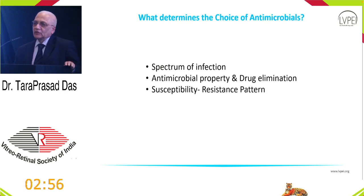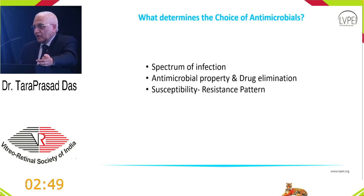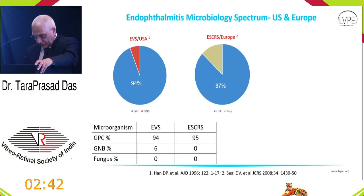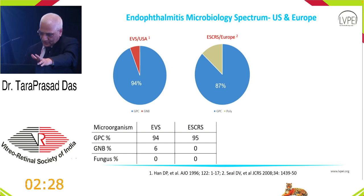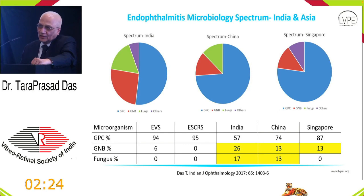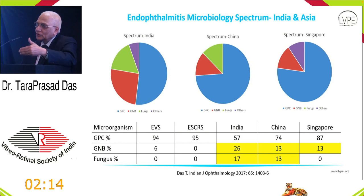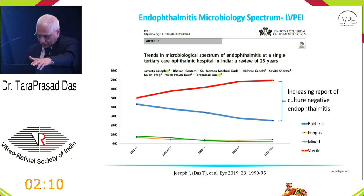How do you determine which antibiotic to use? You look at the spectrum of infection in your locality, the antimicrobial properties, drug elimination kinetics, and susceptibility/resistance patterns. Publications from EVS, ESCRS Europe showed gram-negative bacilli at barely 6 percent in the West. But comparing data from India and Asia, we find a substantial proportion of gram-negative bacilli and around 15 to 17 percent fungi. We simply cannot copy-paste solutions from elsewhere — we need to find our own local answer.